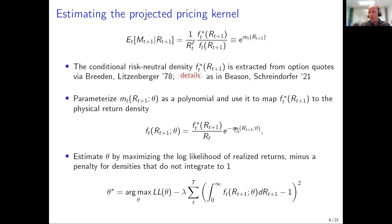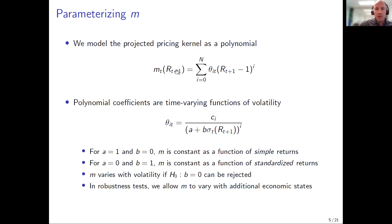The key details are in how we parameterize the pricing kernel. I need a functional form that captures how the pricing kernel changes as a function of volatility. We write down a very simple polynomial: the log projected pricing kernel is a function of returns with time-varying coefficients. We use a monomial basis — rather than orthogonal polynomials — for a reason that will become apparent when I discuss the coefficients.